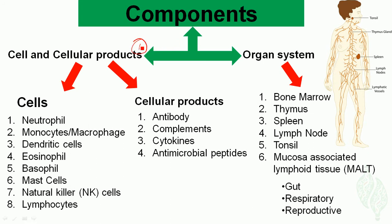The first part is the cells and cellular products, and the second part is the organ system. Within the cells and cellular products, we have the cells and the cell-derived products.